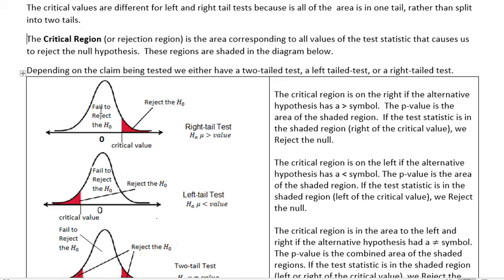If the test statistic is in the shaded region, then we reject the null. So we do that test statistic, remember we have the critical value, and then we do the test statistic to say where does it fall. If our test statistic is in the shaded area, then we would reject the null. If our test statistic fell in the unshaded area, then we would fail to reject the null.